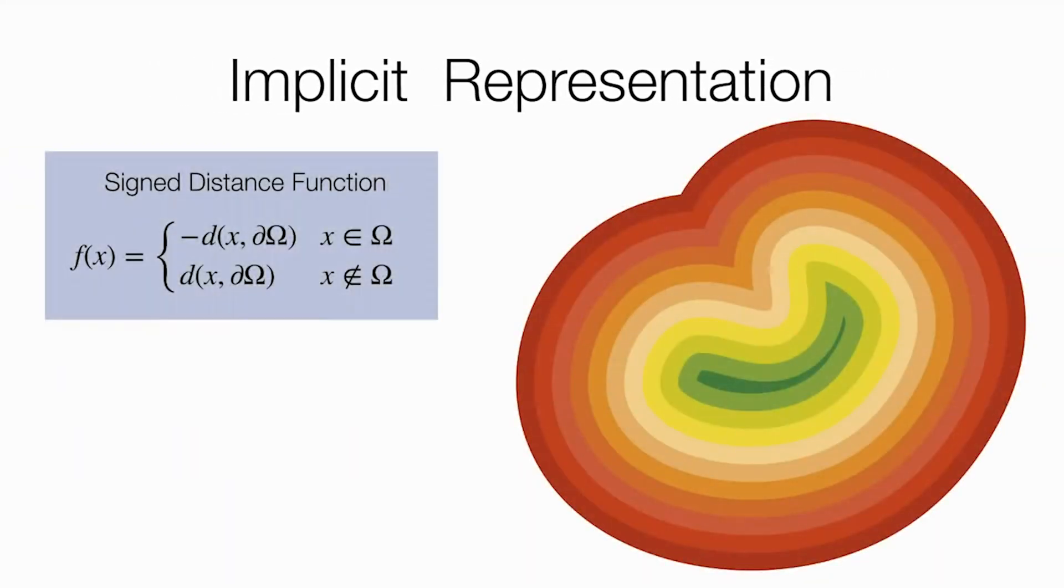One favorable family of implicit representation are sign-distance functions. This representation assumes that the model surface is defined as a boundary of some set omega. Then, the implicit function is defined by the distance to the boundary, with additional sign information discriminating interior from exterior points.